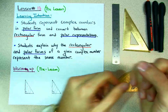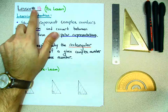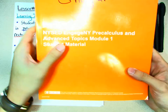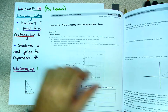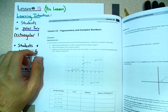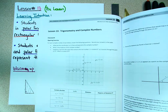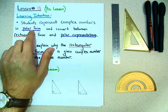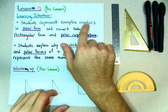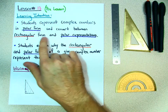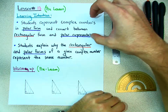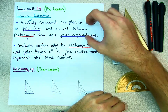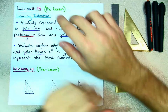Hello everybody, welcome. This is Lesson 13 in Module 1 of Engage New York for Precalculus. We should be on this page, and before we can jump into trigonometry in the complex plane, there are a lot of prerequisite things we need to go over. The game plan for this lesson: students represent complex numbers in polar form and convert them between rectangular and polar representations.